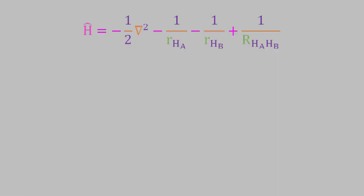Anyway, now that we've applied the Born-Oppenheimer approximation, we have a somewhat simpler Hamiltonian, which we can use in the Hartree-Fock method or perturbation theory to get the approximate energy and wave function of the system, as we saw in the previous video. That takes care of the H2 plus ion. But as you might guess, most systems are more complex than that. Let's try a slightly more complicated one: the hydrogen molecule, H2.